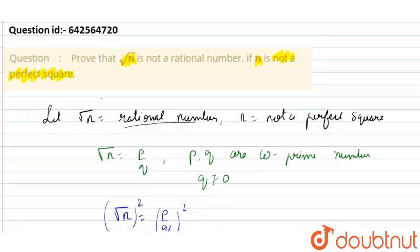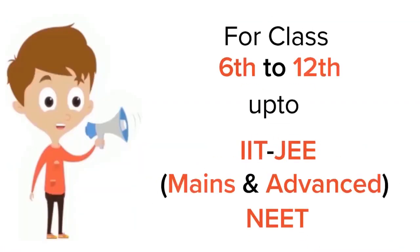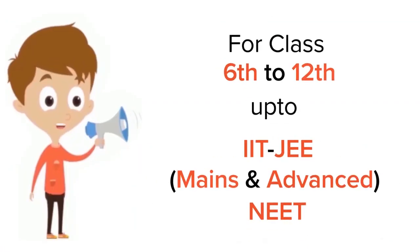So if n is not a perfect square, √n cannot be a rational number. I hope you have liked the solution. Thank you very much.